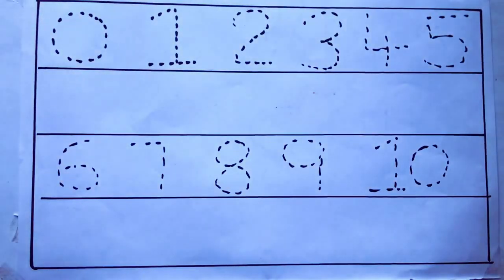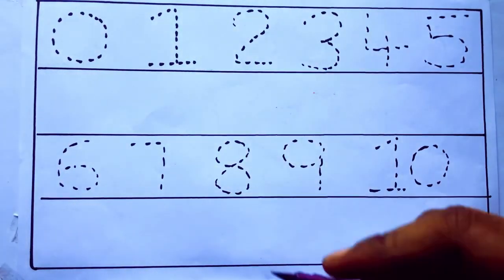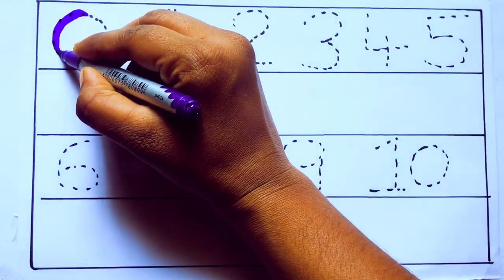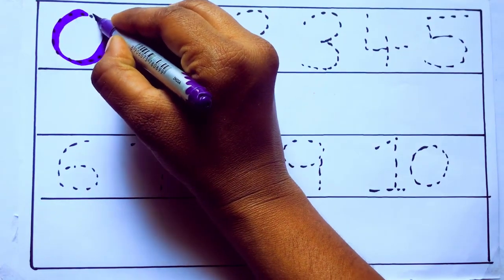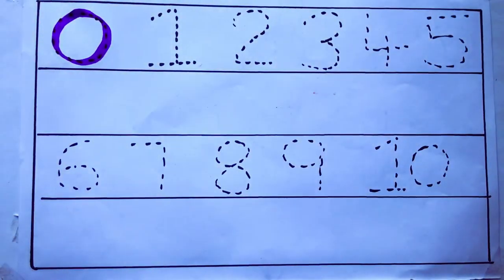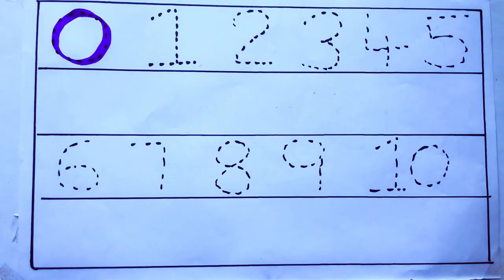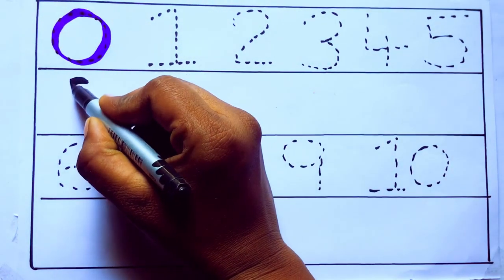Let's draw numbers. Violet color. 0. Z-E-R-O. Zero.